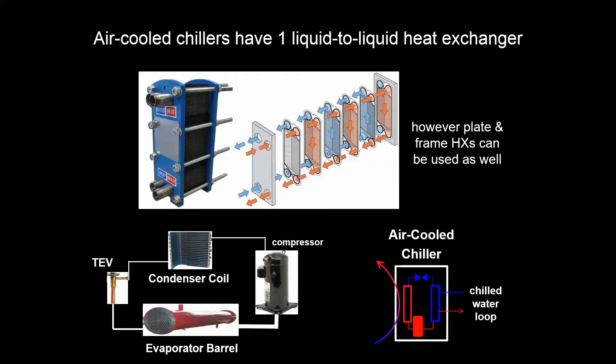But with a plate and frame heat exchanger, as you can see with this diagram here, you have very close contact, high pressure loss interaction with the two loops split across these alternating plates.